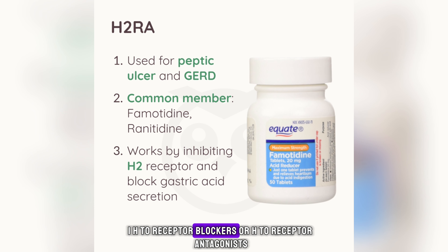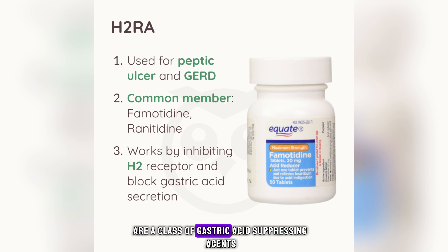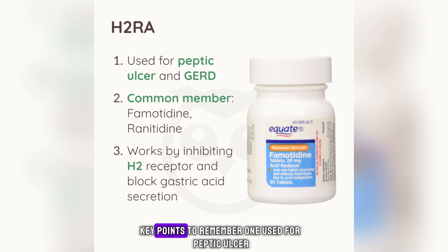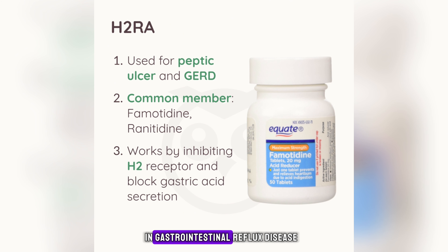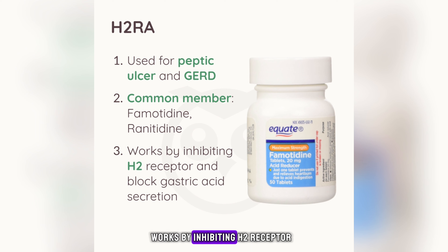H2-receptor blockers, or H2-receptor antagonists, are a class of gastric acid-suppressing agents frequently used in various gastric conditions. Key points to remember: they are used for peptic ulcer and gastrointestinal reflux disease. Common members include Famotidine and Ranitidine. They work by inhibiting the H2-receptor and blocking gastric acid secretion.